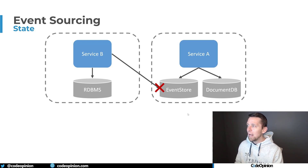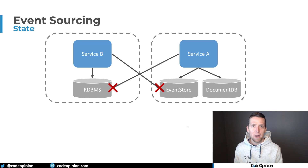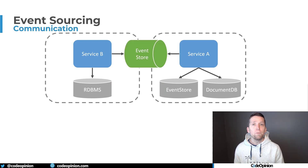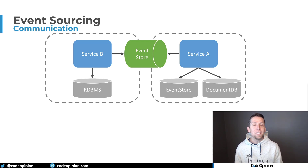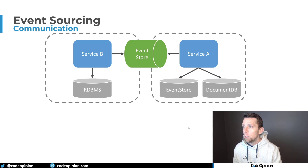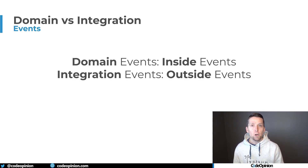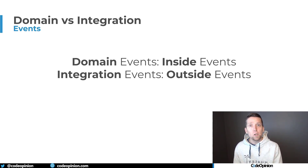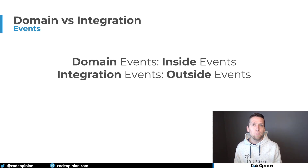Just like you'd never have Service A reach out directly to Service B's relational database — because it represents state — don't confuse your event stream used within a logical boundary to represent state with event streams used to communicate and integrate with other service boundaries. You may use the exact same infrastructure or event store, but don't confuse those different types of event streams. You have events on the inside and events on the outside. Events on the inside are part of your event stream representing state within that boundary. You may have different integration events — those are the events you expose to integrate with other service boundaries. These likely version differently and have different data. Don't conflate state and communication.